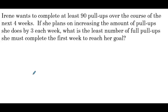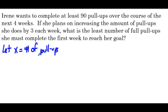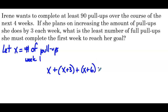Irene wants to complete at least 90 pull-ups over the course of the next four weeks. If she plans on increasing the amount of pull-ups she does by 3 each week, what is the least number of full pull-ups she must complete the first week to reach her goal? We'll let x equal the number of pull-ups in week 1. Week 1: x, Week 2: x plus 3, Week 3: x plus 6, Week 4: x plus 9. She wants this total to be at least 90, so greater than or equal to 90.